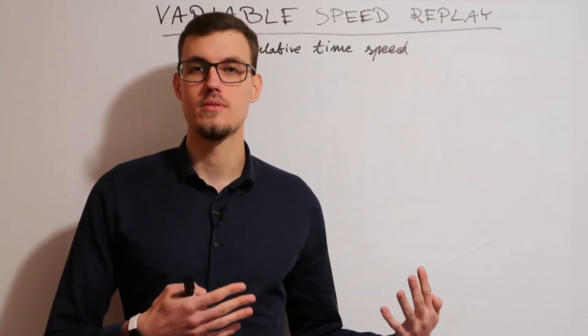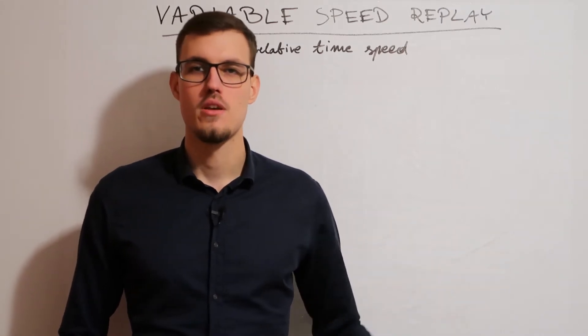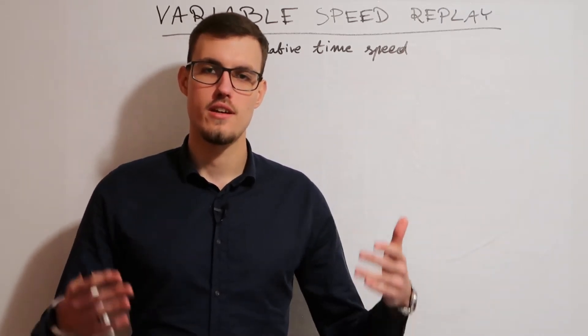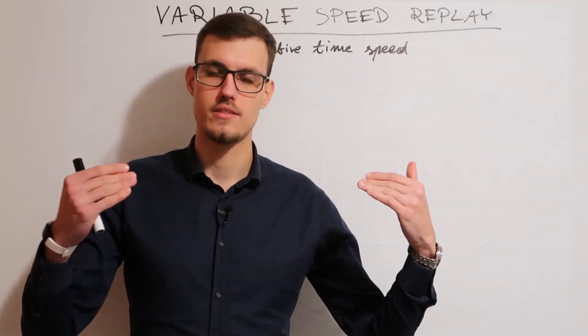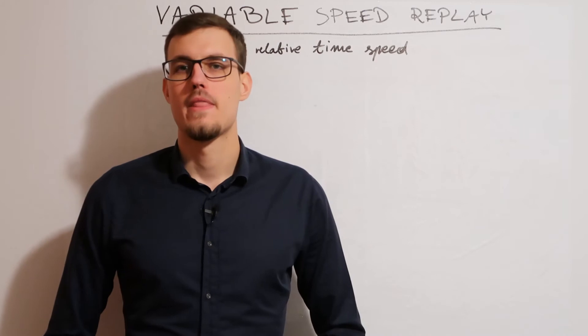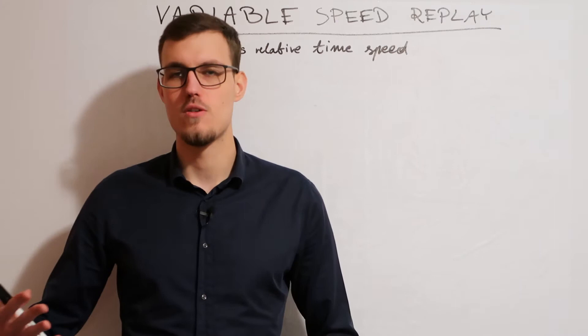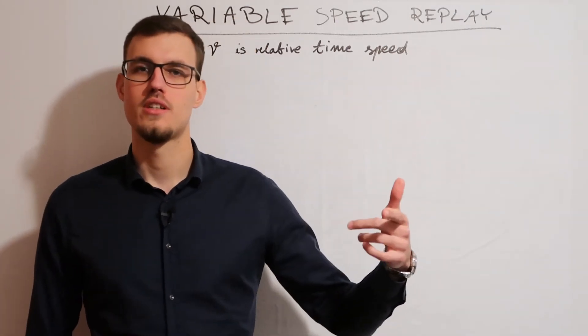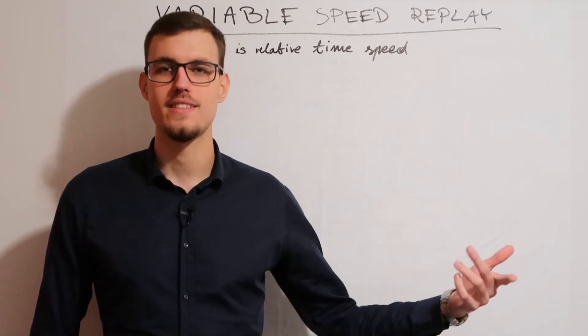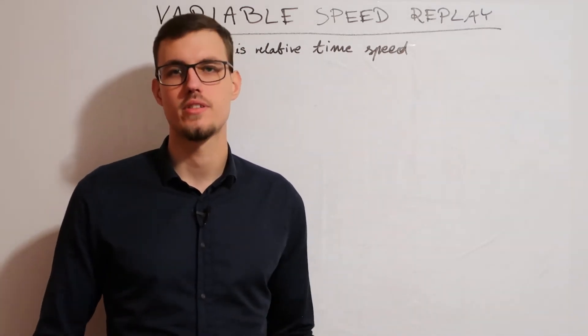In the second example, V was equal to 0.5 because we lowered the frequency 2 times. We could say that V is the relative time flow or the speed at which we want to replay our cassette.